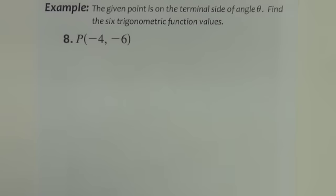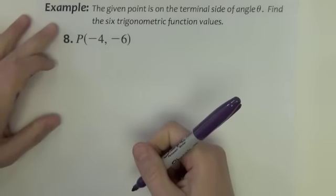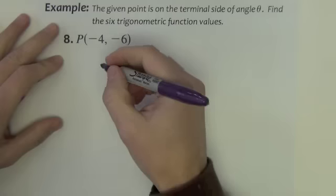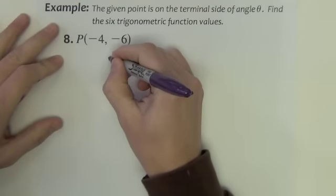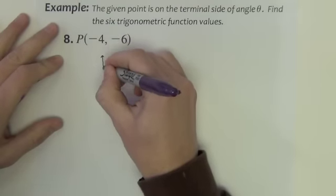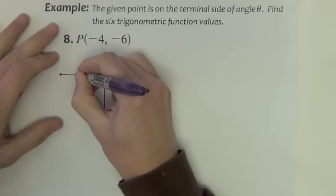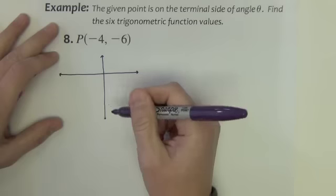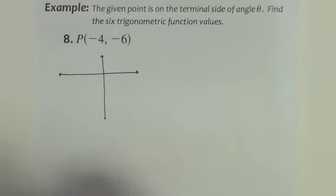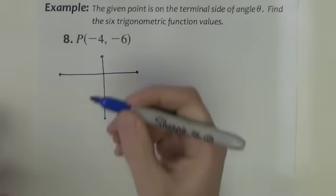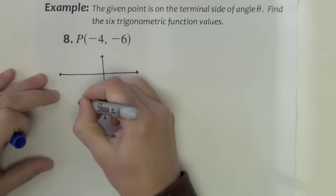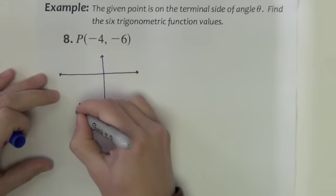So first example, the given point is on the terminal side of angle theta, find the six trigonometric function values. The point is at negative four, negative six, which means we are going four units to the left and six units down right there.